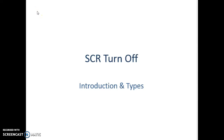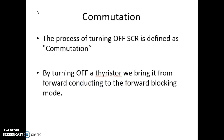In this short video we are going to see what is commutation and what are the various types and what are the conditions to achieve it. Commutation is nothing but turning off the SCR. The process of turning off the SCR is called commutation. Turning off the SCR means we are bringing it from the forward conduction state into the forward blocking state — that is called turn off.